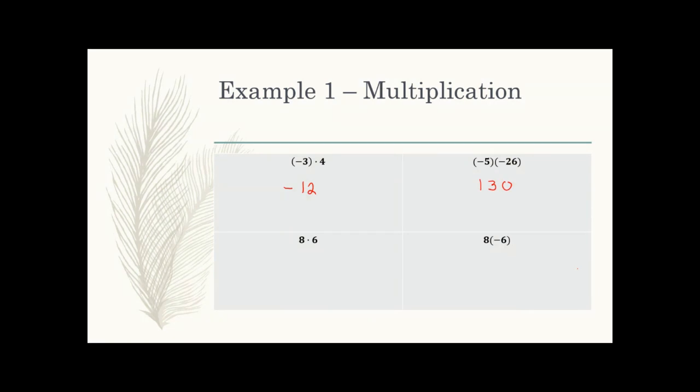The reason I teach these rules even though you can use a calculator is because sometimes you may accidentally enter it incorrectly. Knowing whether your answer should be positive or negative helps you spot mistakes. Bottom left: 8 times 6 — both positive numbers, so the answer is positive. Eight times 6 is 48. Bottom right: positive times negative, so there's one negative sign, giving a negative answer. Eight times 6 is 48, so the answer is negative 48.